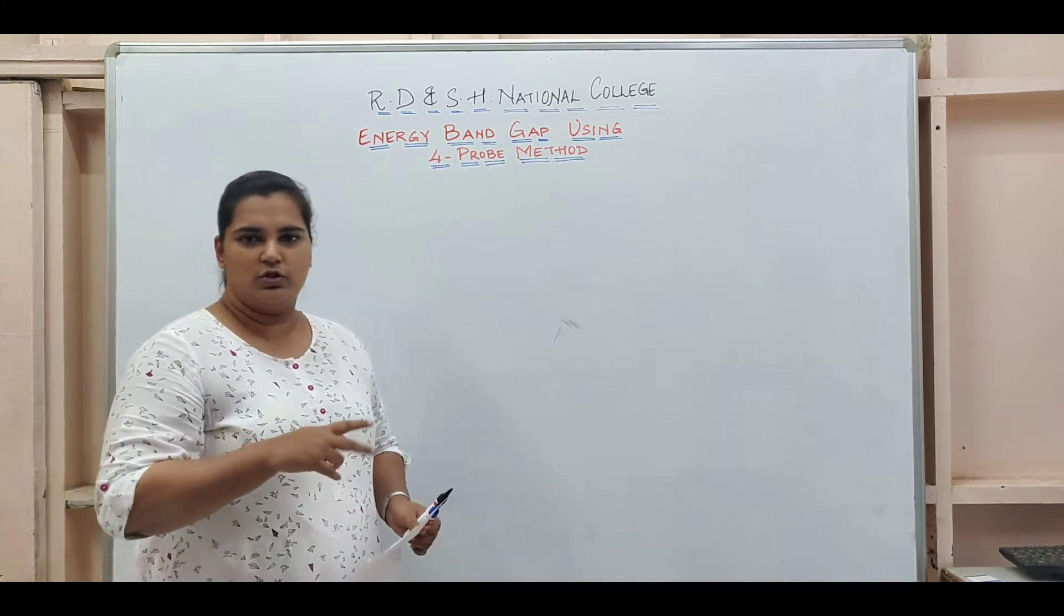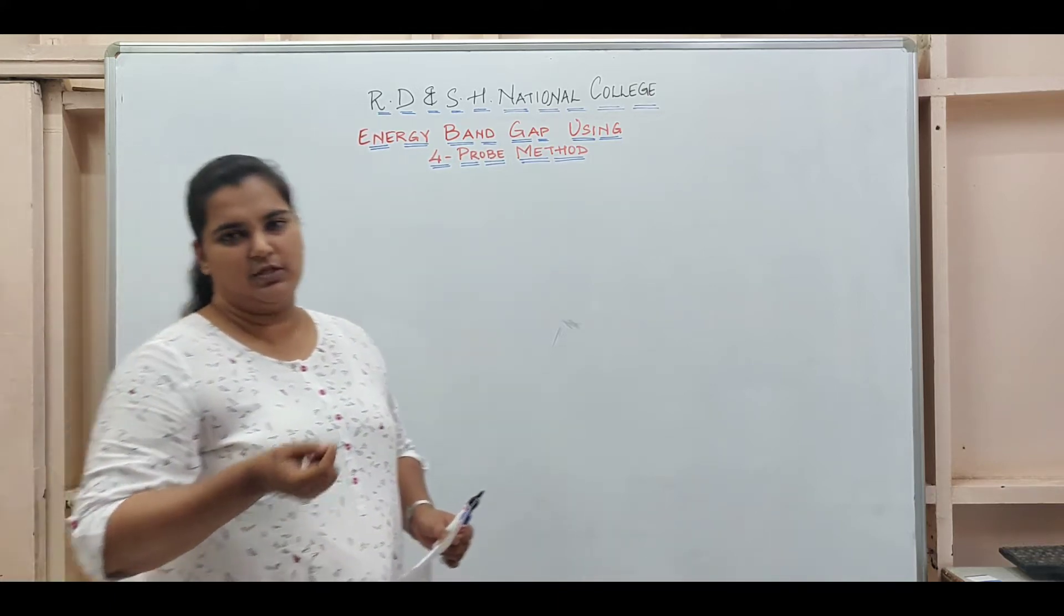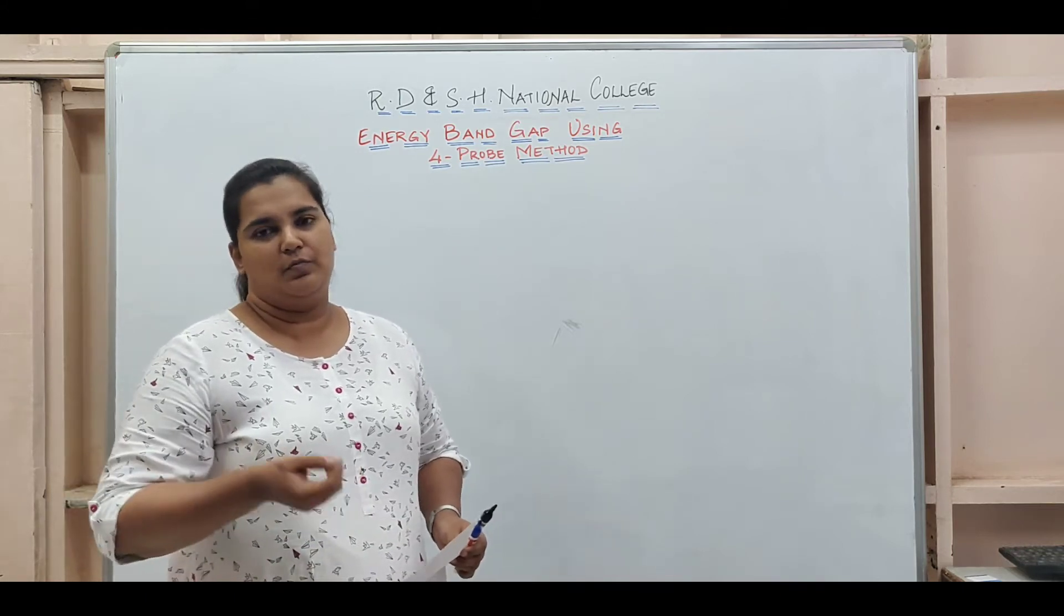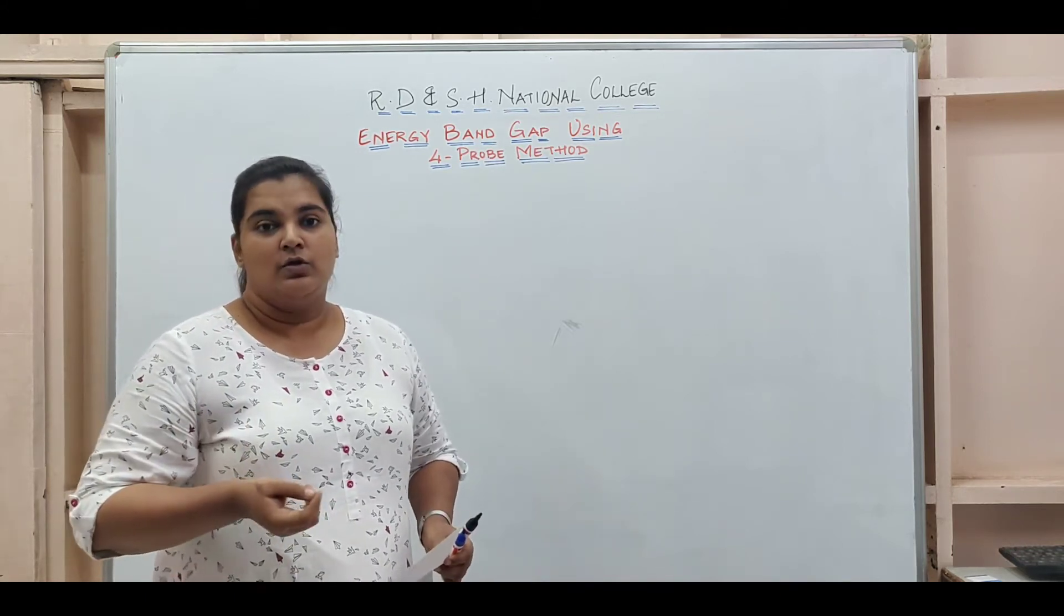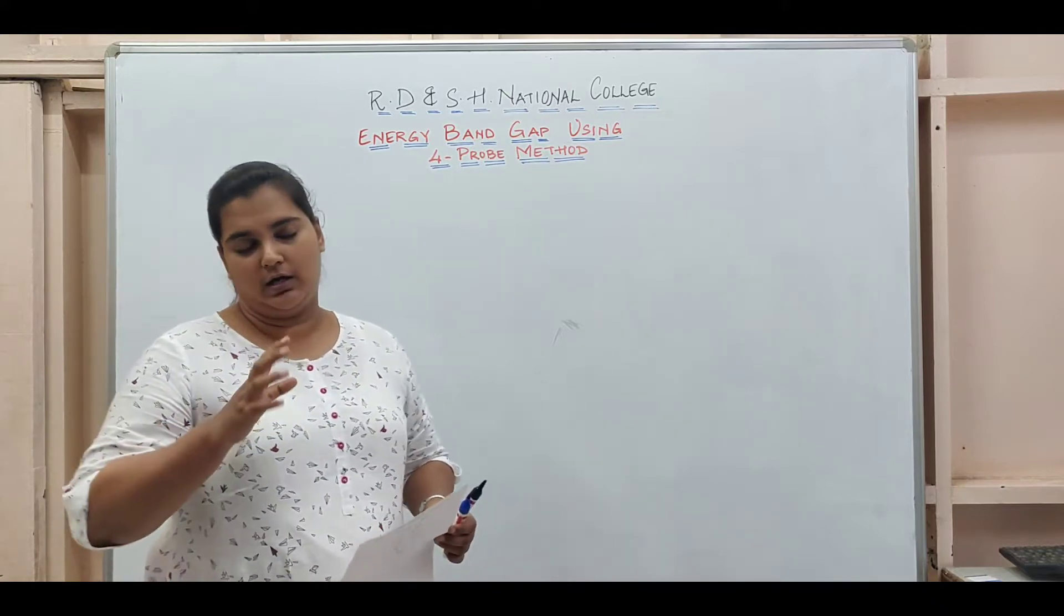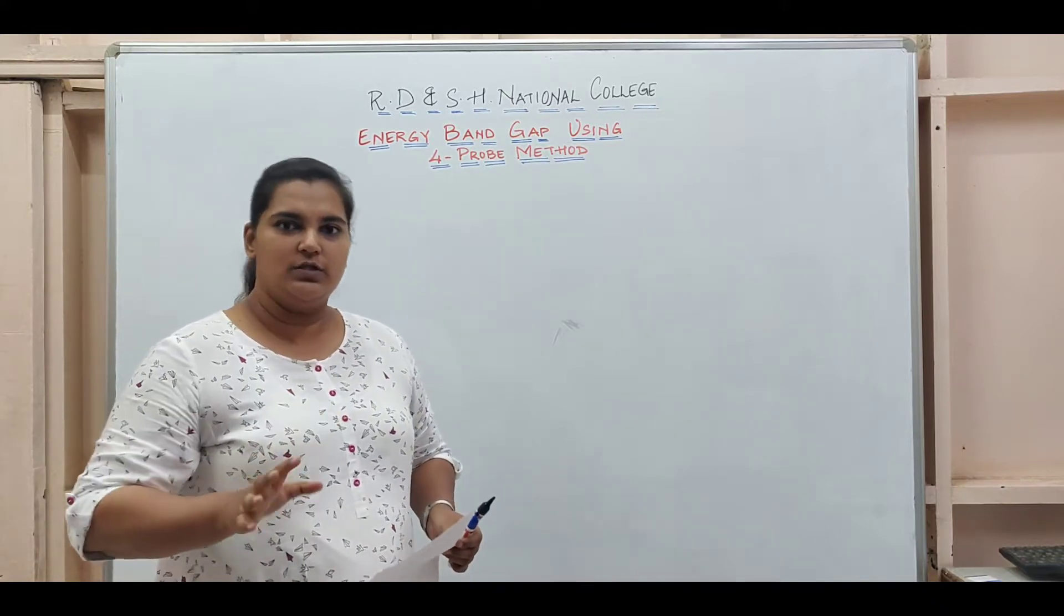We all know the two most commonly used semiconductor samples are germanium and silicon. Germanium has an energy gap of about 0.7 electron volts. We will proceed ahead and now see how we will perform this experiment for our sample.